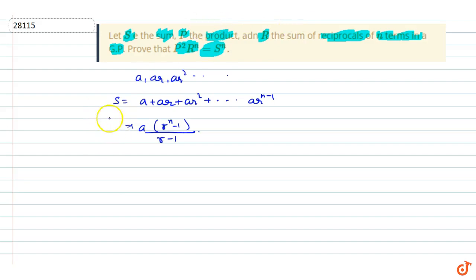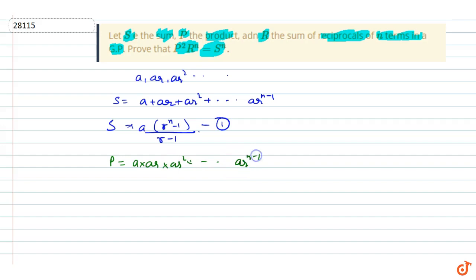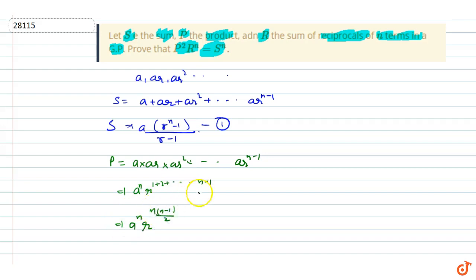Now find product P equals a into ar into ar squared, up to ar to the power n minus 1. That means a to the power n, r into 1 plus 2 up to n minus 1, so we can say a to the power n, r into n(n minus 1) by 2. This is our P value.